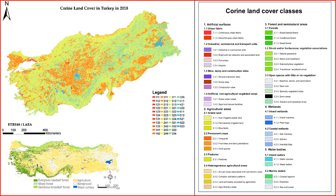5. Industrial zones. Industrial and manufacturing activities are concentrated in specific zones to support economic development. These areas are characterized by factories, warehouses, and infrastructure for production.